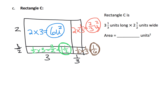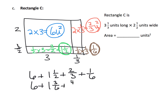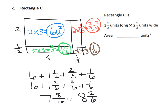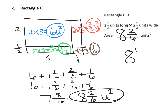We're going to add all those partial products: six plus one and a half plus two thirds plus one sixth. Converting to common denominators, that's six plus one and three sixths plus four sixths plus one sixth. Parents and teachers, that's a prime spot to pause and let students work through common denominators. We get seven and eight sixths, which equals eight and two sixths square units — or eight and one third square units.